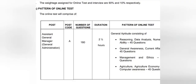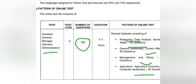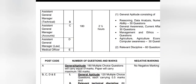There will be one online test. For AGM General Administration, the exam will cover reasoning, data analysis, numerical ability, current affairs, management ethics, and agriculture and economy sector questions. The total duration for this exam is two and a half hours.